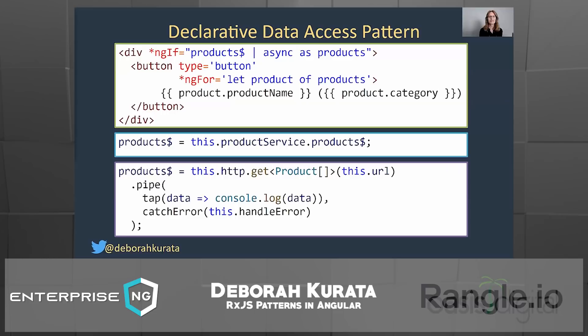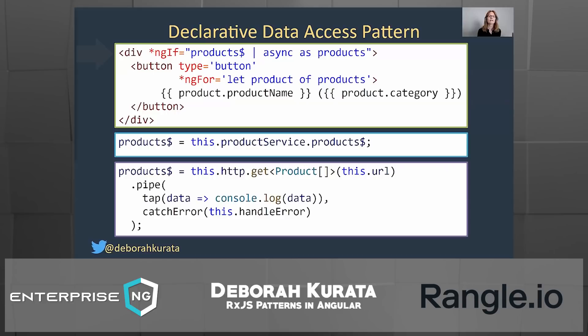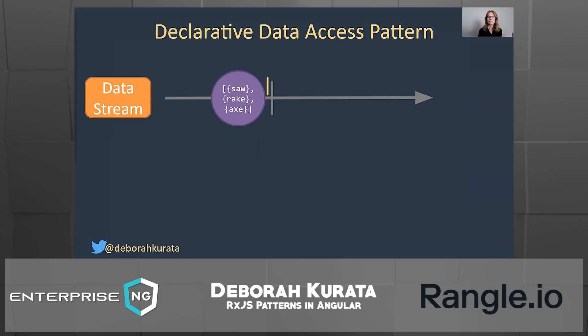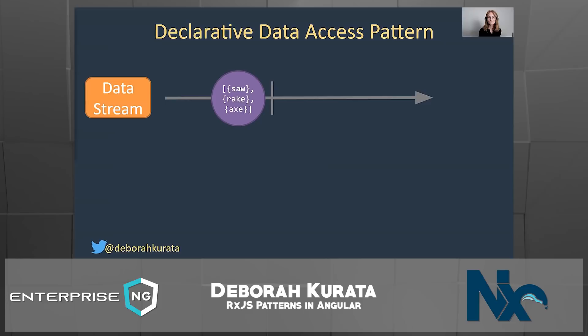Here's our first declarative pattern — the declarative data access pattern. At the bottom we have products$ in our service; in the middle, products$ in our component; and in the template, we use the async pipe. The marble diagram shows the data stream emitting that array of products, and the vertical line indicates it's done. Whenever we issue an HTTP request, it is one and done — it returns the response and then it's finished.